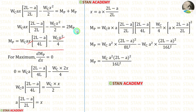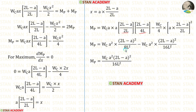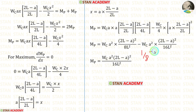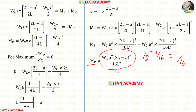In this equation, let us apply the value of X. 2L into 4L gives 8L squared. (2L minus A) into (2L minus A) gives (2L minus A) whole squared. A into A gives A squared. We can take A squared outside, and also (2L minus A) squared outside. 2L squared is 4L squared. 4L squared into 4 gives 16L squared. Now we can add the two terms: 1 upon 8 minus 1 upon 16 gives 1 upon 16. So for MB, we get WA squared (2L minus A) whole squared upon 16L squared.